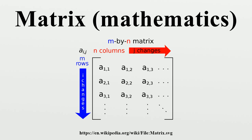A matrix with an infinite number of rows or columns is called an infinite matrix. In some contexts, such as computer or algebra programs, it is useful to consider a matrix with no rows or no columns, called an empty matrix.